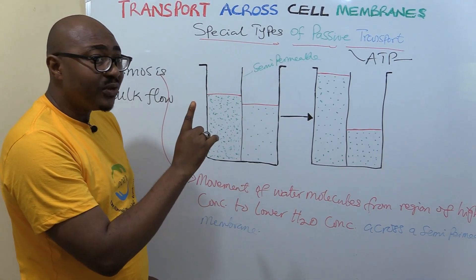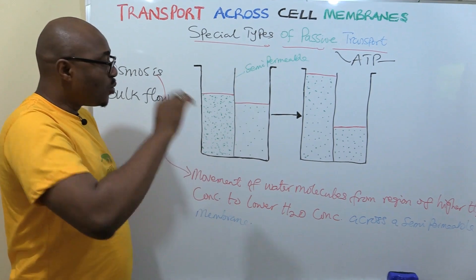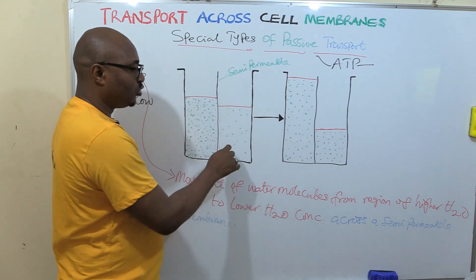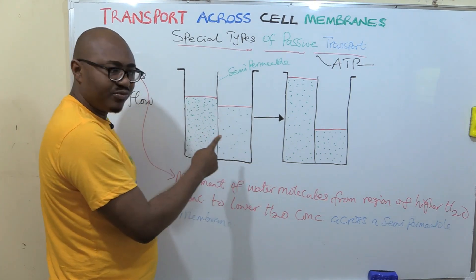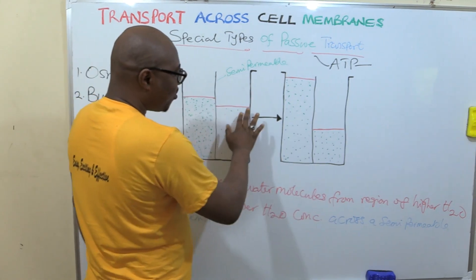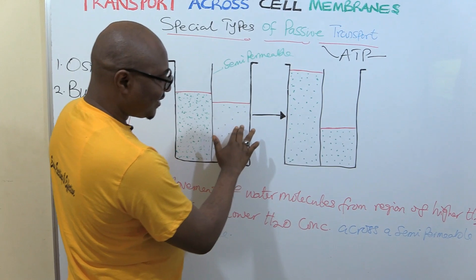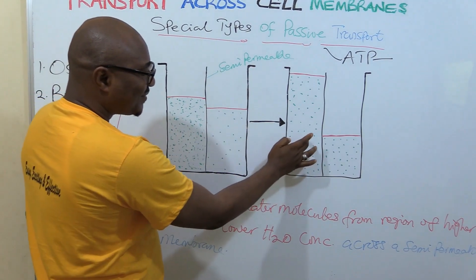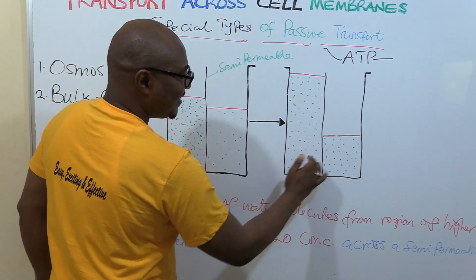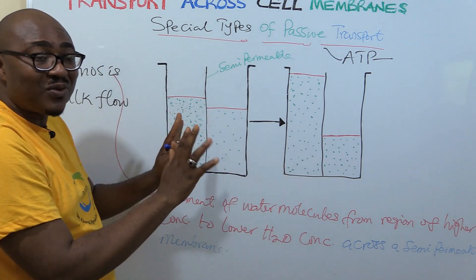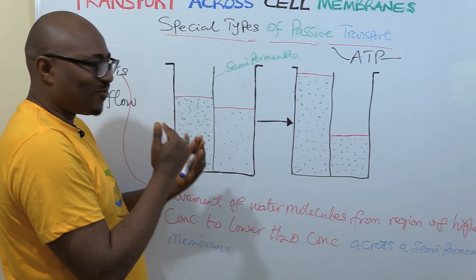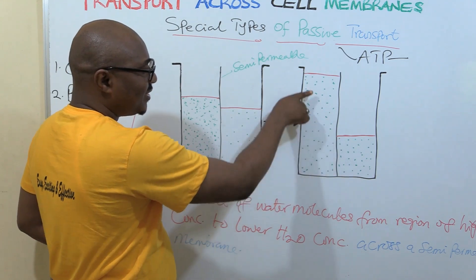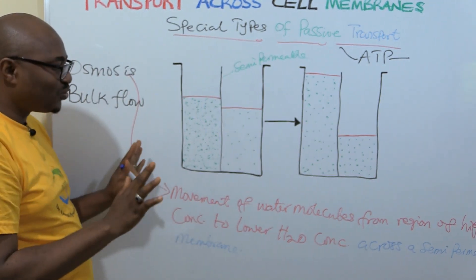Only water is moving now. Solutes, they are not moving. So, in osmosis, the semi-permeable membrane is impermeable to the solute. Only water can move. And look at the result here. Water has moved. So, the water level has come down. And it moves to this side. It's increased. So, you now see that the concentration in these two parts are now the same. So, that's what it wants to achieve. It's the movement of water molecules.